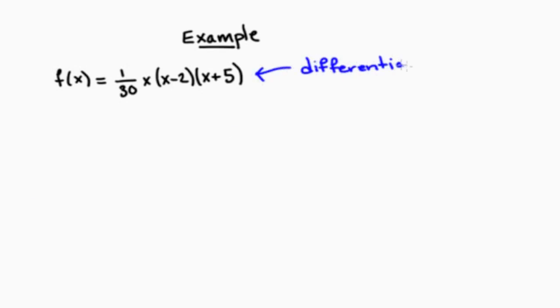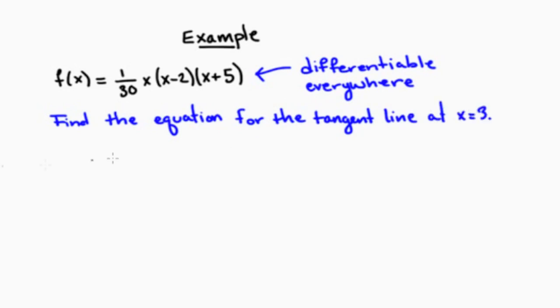As an example, let's look at the following cubic equation: f(x) is 1/30 x(x-2)(x+5). This function is differentiable everywhere, and so in particular, it's differentiable at the point x=3.